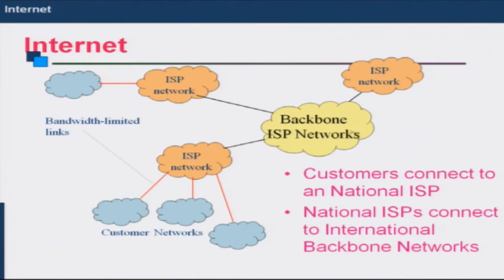National ISPs are internet service providers which have got national presence — they have a network which spans across a nation. For example, in India we have Reliance and Airtel as national ISPs. In North America we have Cable and Wireless and AT&T, which are national ISPs. Every country would have national ISPs providing internet connectivity, and the customer networks connect to these national ISPs.